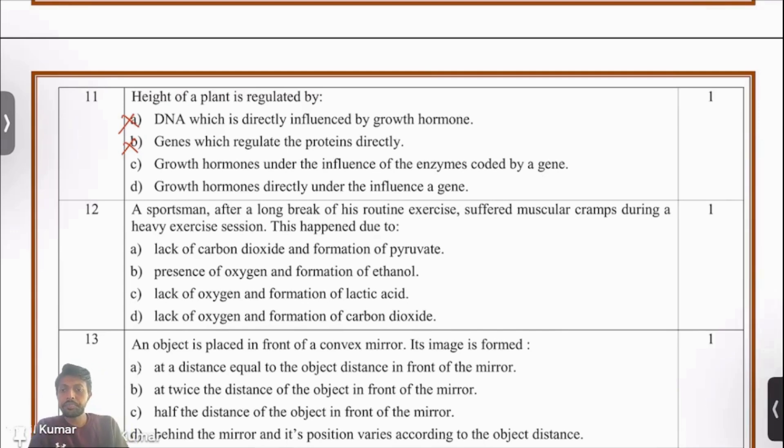Growth hormones directly influence cell elongation and division. They affect the plant height. However, their production and activity are controlled by enzymes. These enzymes are coded by the genes. So it's the third option that's correct, not directly under the influence.